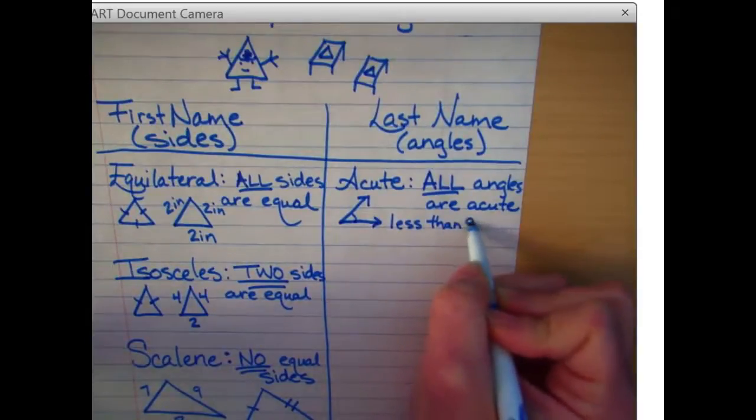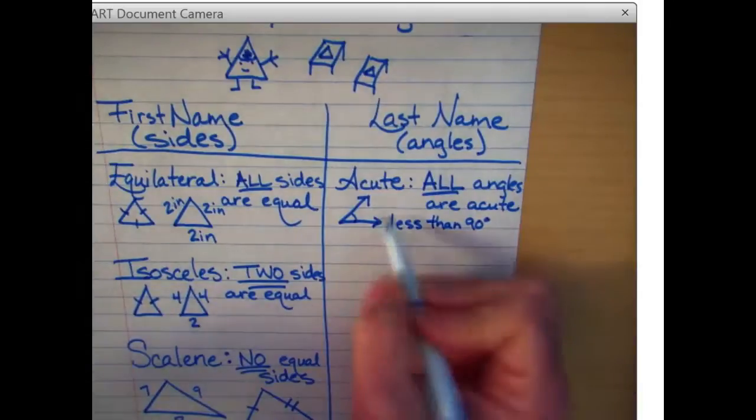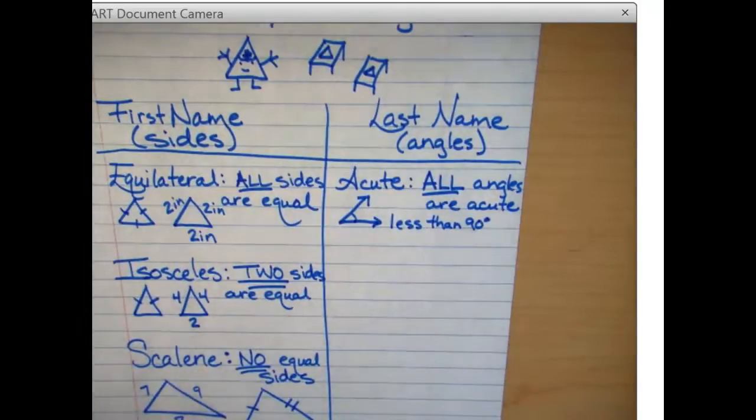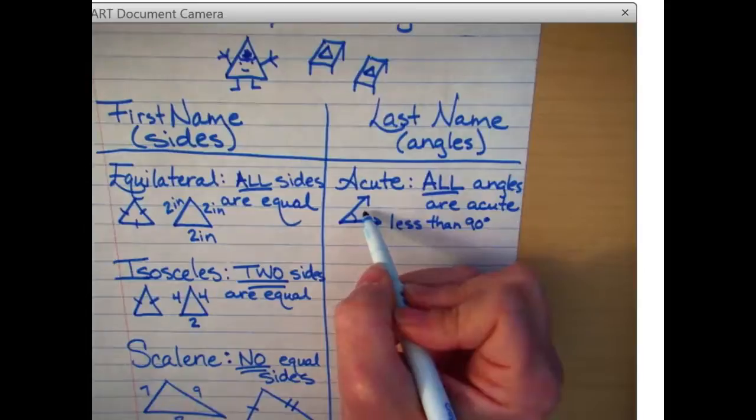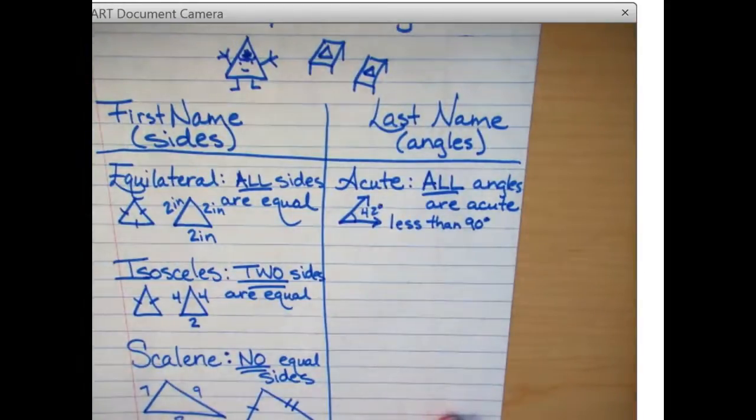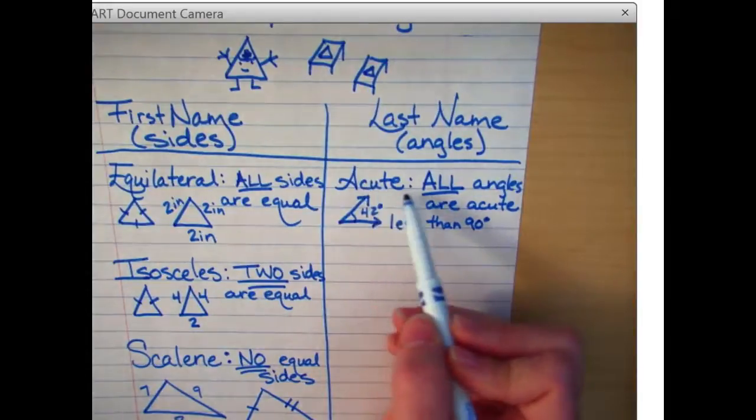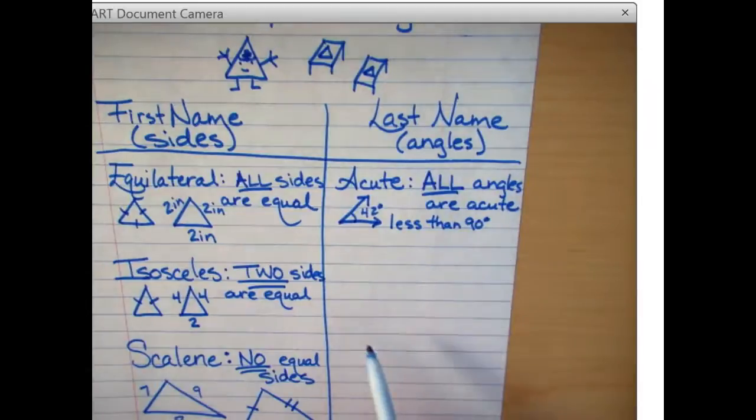Sometimes you're just going to have to look at it and determine if it's an acute angle. Sometimes they'll tell you that it's 42 degrees. You'll see it both ways. But in order for it to be acute, all three angles have to be acute.